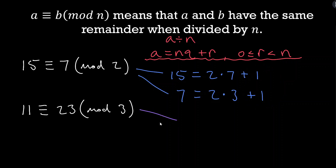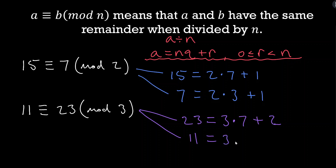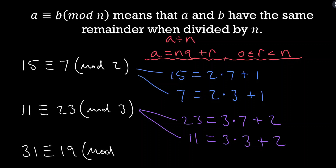Let's do the other examples: 23 equals 3 times 7 plus 2, and 11 equals 3 times 3 plus 2. Again we see the same remainder. At this point I encourage you to pause the video and try some examples on your own — congruent mod 2, mod 3, maybe mod 4. For example, 31 is congruent to 19 mod 4. Think about why that's true and come up with other examples. This is really good for building intuition.